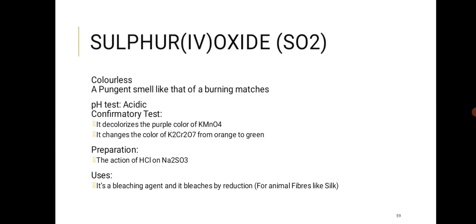Chlorine bleaches by oxidation and is used for plant fibers like cotton. It is also used in water purification as a disinfectant — chlorination of water is one of the key processes. Sulfur dioxide (SO2) is colorless with a pungent smell like burning matches, since sulfur is present in matches.